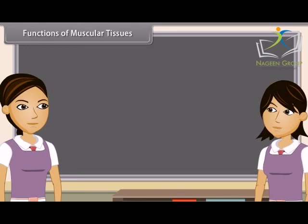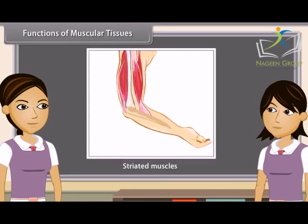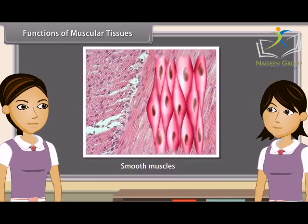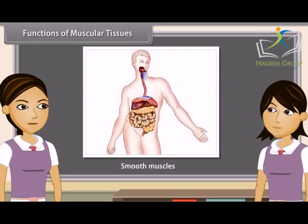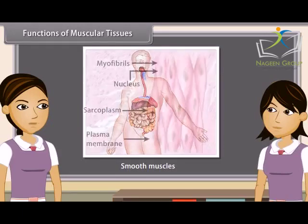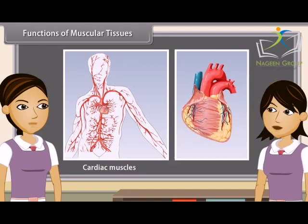Functions of muscular tissues: Striated muscles provide the force for locomotion and all voluntary movements of the body. Smooth muscles are involuntary — they do not work according to our will; movement of food in the alimentary canal and opening and closing of tubes are due to smooth muscles. Cardiac muscles contract and relax rapidly, rhythmically and tirelessly throughout life; this contraction and relaxation helps heart muscles to pump and distribute blood to various parts of the body.